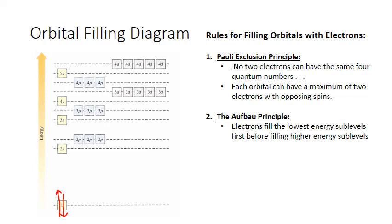The second rule is called the Aufbau principle. It states that electrons fill the lowest energy sublevels first before moving on to higher energy sublevels. For any atom, that means we always start at the 1s sublevel and fill each level completely before moving up to the next level.